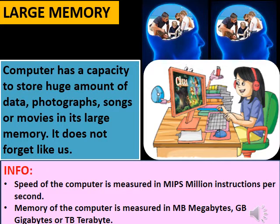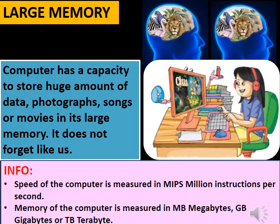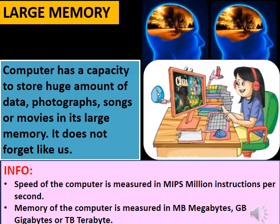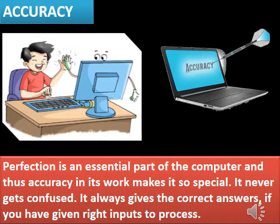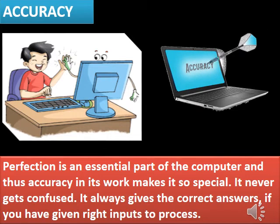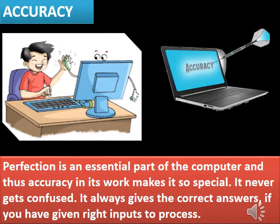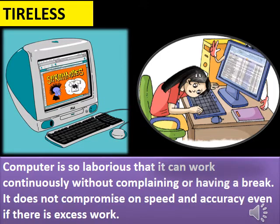Speed of a computer is measured in MIPS — millions of instructions per second. Memory of a computer is measured in MB (megabytes), GB (gigabytes), or TB (terabytes). The third characteristic is accuracy: perfection is an essential part of the computer. It never gets confused and always gives the correct answer if you have given the right input.